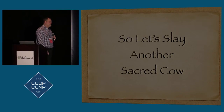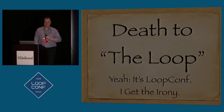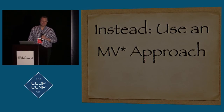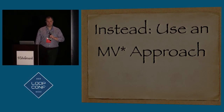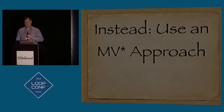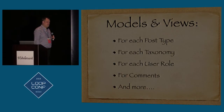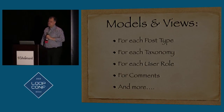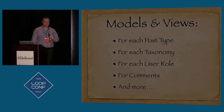So let's slay another sacred cow — death of the loop. It's LoopConf, I get the irony. Instead, use a MV* approach, also known as MVC, but we're not going to talk about the C. Some plugins do this but generally rip out what WordPress is and replace it — that's not what I'm talking about. I'm talking about being very WordPress-ish or WordPress-centric, inspired by Backbone. So models and views for each post type, for each taxonomy, user, role, comments, and more. List classes to wrap WP_Query.